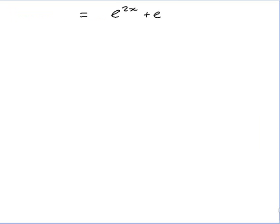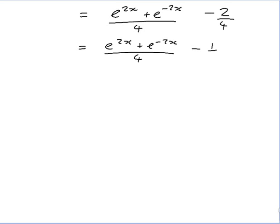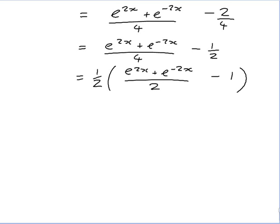So that would be equal to e to the 2x plus e to the minus 2x over 4, minus 2 over 4, which is e to the 2x plus e to the minus 2x over 4 minus one half. I need a half out the front, so that's a half of e to the 2x plus e to the minus 2x over 2, minus 1. And e to the 2x plus e to the minus 2x over 2 is exactly cosh 2x by the definition, so this equals a half of cosh 2x minus 1, and that's the end of the problem.